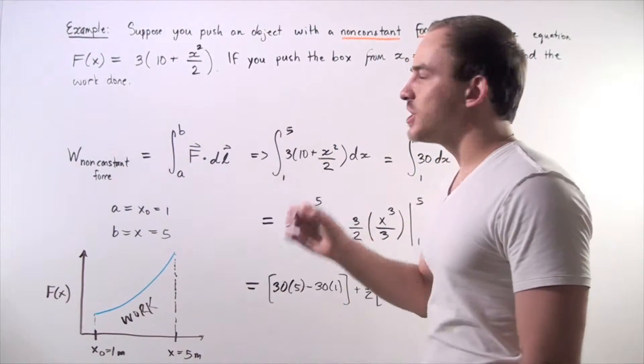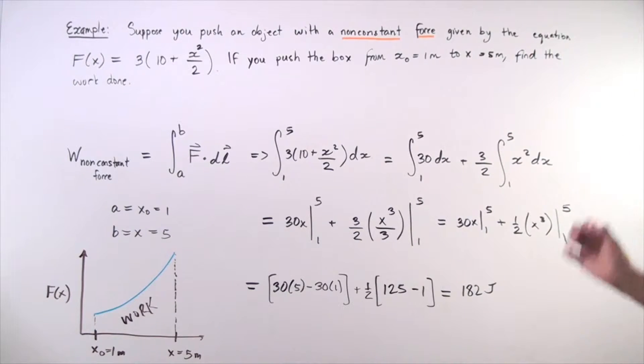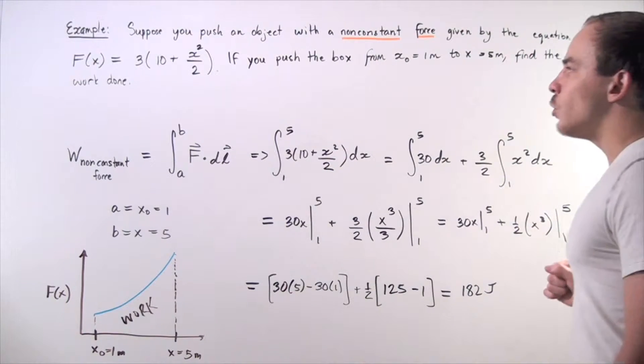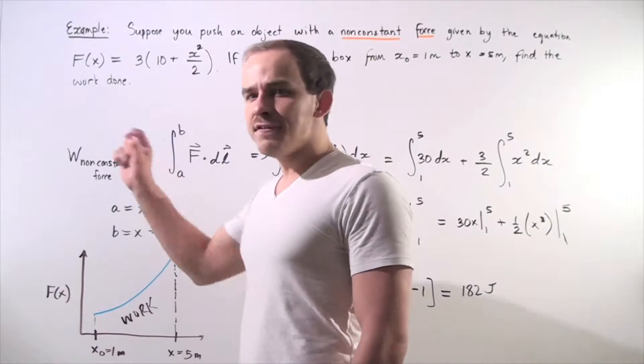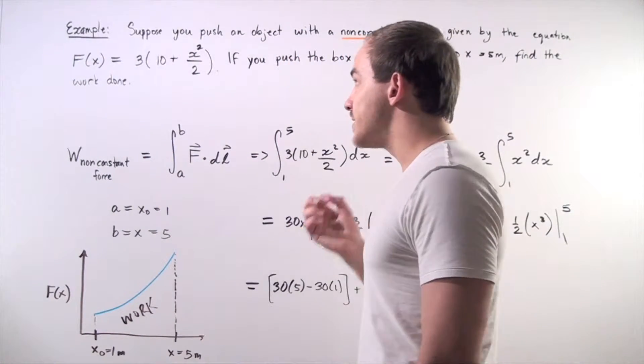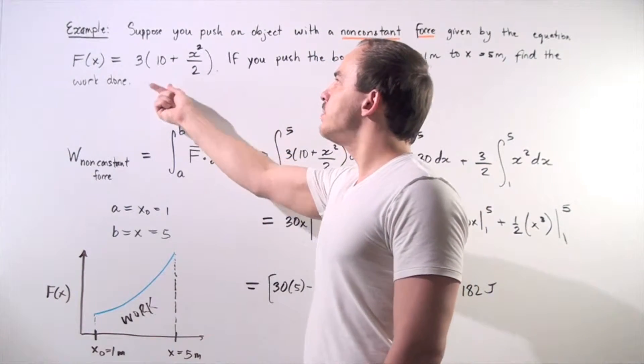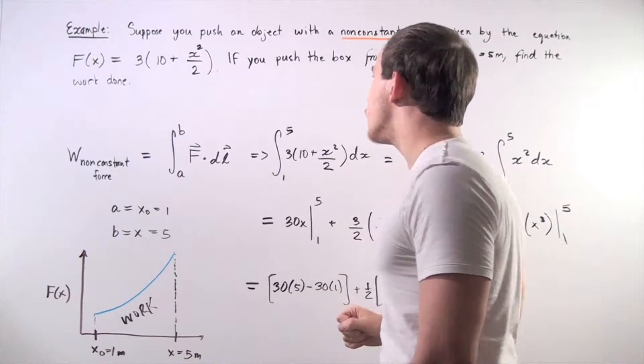Let's suppose that you push an object along the x-axis with a non-constant force given by the following equation. So, f of x, where f is our force and x is our position, is equal to 3 times 10 plus x squared divided by 2.